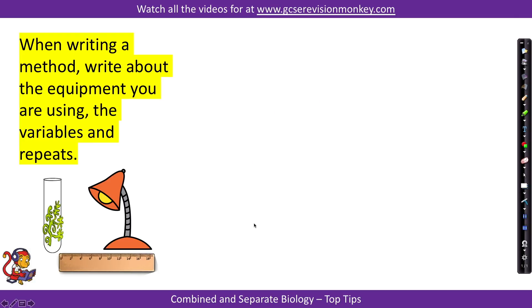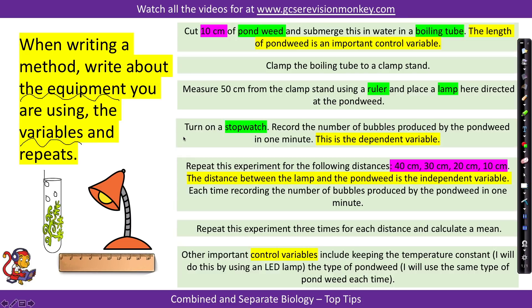Tip number seven. When writing a method, write down the equipment, variables, and repeats within the method itself. For the photosynthesis required practical — changing the distance between a lamp and pond weed and measuring the rate of photosynthesis by bubbles per minute — make sure you state your independent variable and list the values you will use. For example, clearly state: 'the distance between the lamp and pond weed is the independent variable.' Also identify important control variables, such as the length of pond weed.